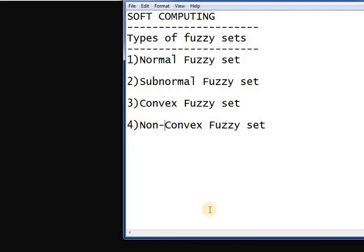So this video covers all the four types of set. Number one: normal fuzzy set, subnormal fuzzy set, convex fuzzy set, and non-convex fuzzy set.